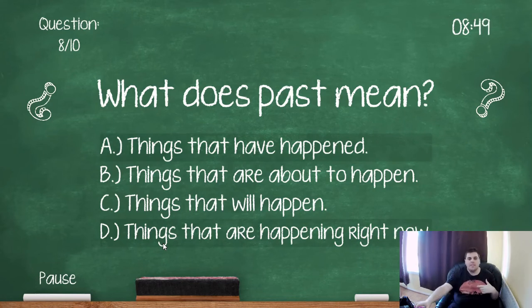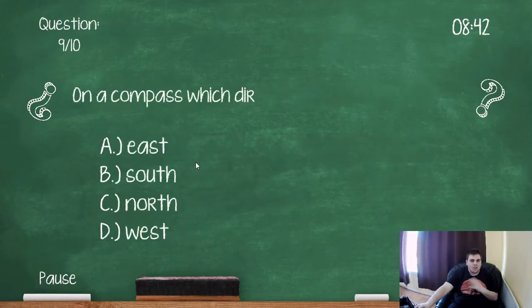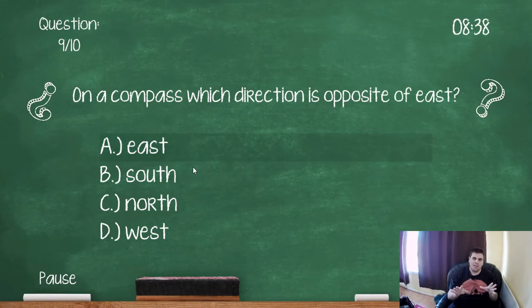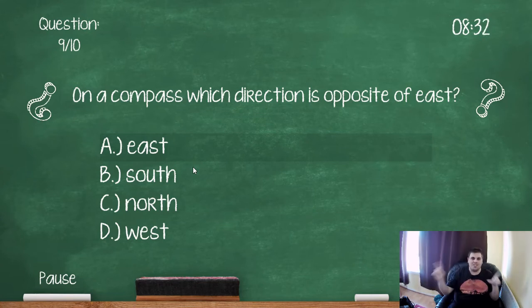What does past mean? Things that have happened, things are going to happen, things that will happen, things that are happening right now. So the past is of course things have already happened. On a compass which direction is opposite of east? So I always remember this by saying never eat shredded wheat so east and west are opposite each other, so eat and wheat.